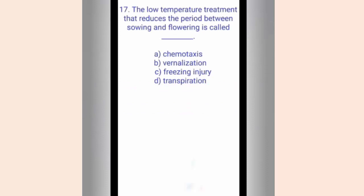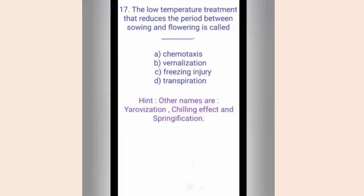Question seventeen. The low temperature treatment that reduces the period between sowing and flowering is called dash. The options are A. Chemotaxis, B. Vernalization, C. Freezing injury, D. Transpiration. The hint given is yarovization, chilling effect, and springification, which are the other terms for the answer. The correct answer is option B, Vernalization. Vernalization shortens the vegetative phase and hastens flowering in plants. Winter variety crops can be converted to spring variety.